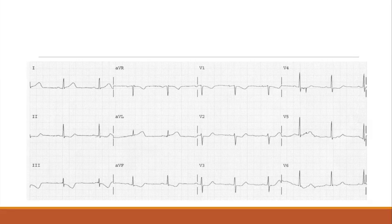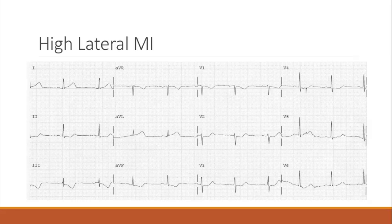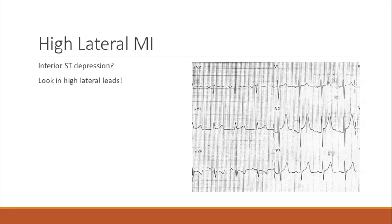Do you see ST elevation anywhere? In lead 1, and maybe AVL — it's a little hard to tell at the baseline, it's really subtle. So this is a high lateral MI, and it is actually the most frequently missed pattern of infarction. The reason is because of where the high lateral leads are, they tend to produce very minimal ST segment changes. The trick here is: if you see depression in leads 2, 3, and AVF, immediately look in leads 1 and AVL for any ST elevation. Even if it's half a box, even if the ST segment is just getting straight instead of being curved — any kind of change in the right clinical picture indicates a high lateral MI.